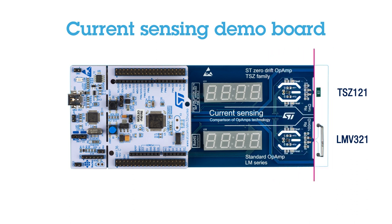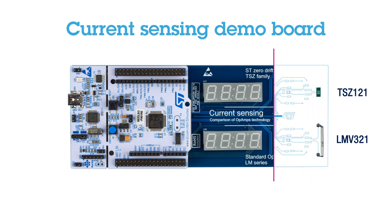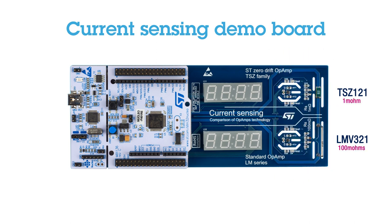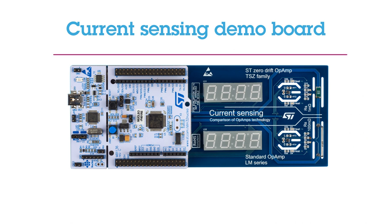Both measure the same current using a shunt resistor. In the first case it is 100 milliohms, while in the second case it is only 1 milliohm. The readings are shown on the LED displays.